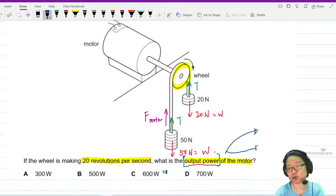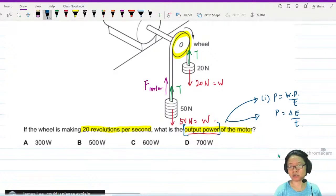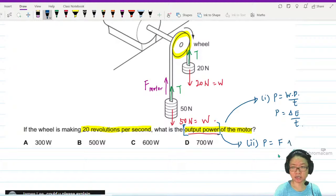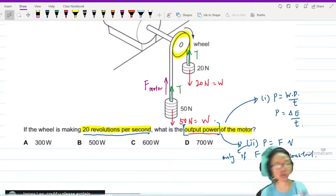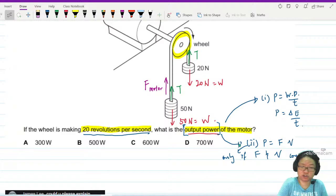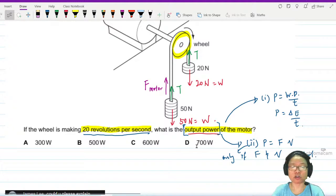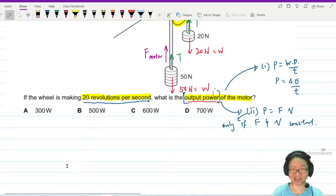So if you want to think about power, because we're looking for output power, right? What are the equations of power we have? Normally, when it comes to power, you only got two choices. Option one, we can use power is work done over time or rate of work done, which is change in energy over t. Option two, power is equal to force times velocity. And you can only use this equation if force and velocity are constant. In this case, I'm pretty sure it's constant because it makes 20 revolution per second. For discussion purposes, I will use both methods.